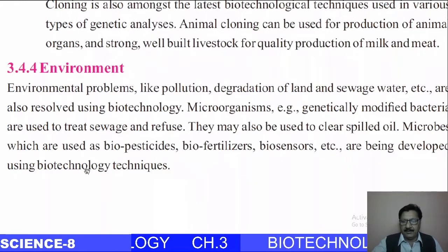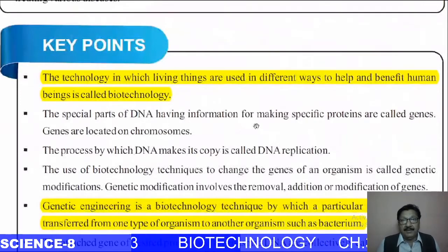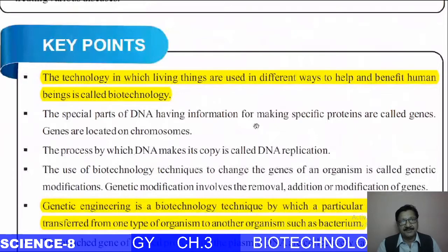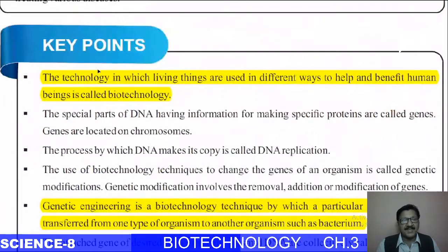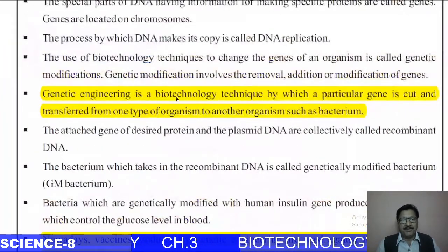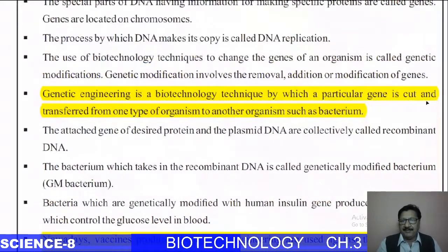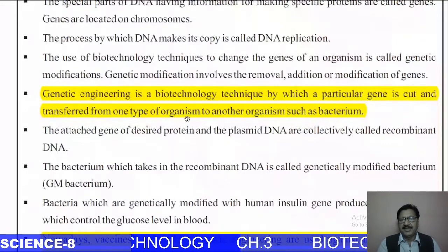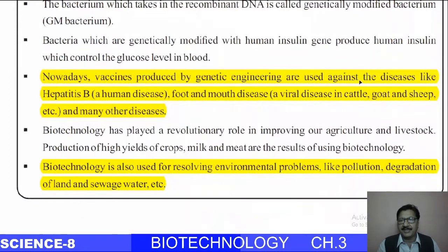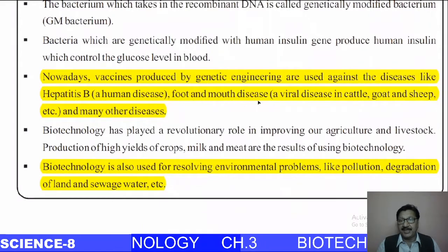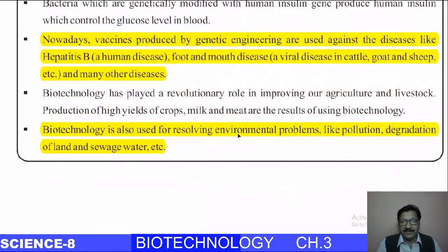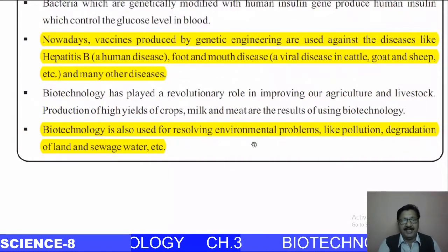That concludes our chapter. Key points to remember: First, biotechnology is the technology in which living things are used in different ways to benefit human beings. Second, genetic engineering is a biotechnology technique by which a particular gene is cut and transferred from one organism to another, such as bacteria. Third, vaccines produced by genetic engineering are used against diseases like hepatitis B in humans, foot-and-mouth disease in animals, and many others. Finally, biotechnology is also used for resolving environmental problems like pollution, land degradation, and sewage water treatment.